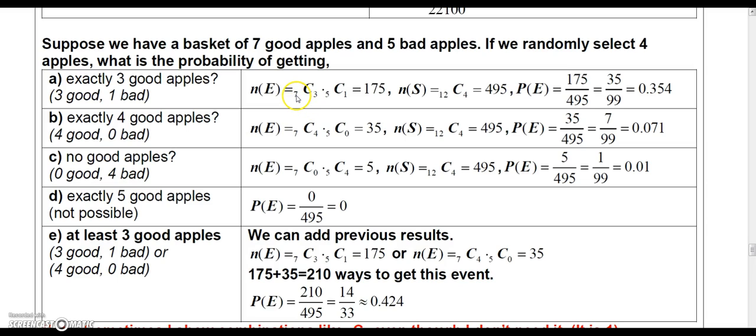That would mean out of the seven good apples, we'd choose three. And out of the five bad apples, we'd choose one. And then multiply those two operations together, and we get 175 ways to choose three good apples and one bad apple.